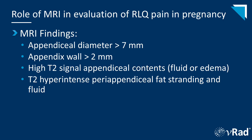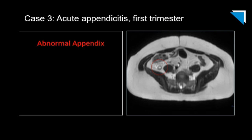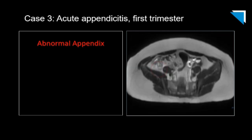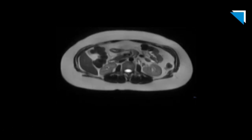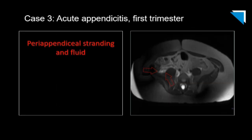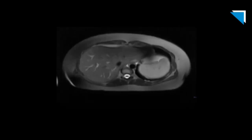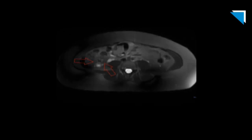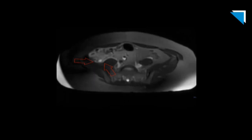Let's move on to some positive examples. Here's a first trimester patient with a thick-walled, fluid-filled, and distended appendix with adjacent stranding and fluid. Here's the T2 axial clip showing the thickened retrocecal appendix with adjacent fluid — just your classic look of acute appendicitis. Here's the T2 axial fat-suppressed image, bringing out that periappendiceal edema. Here's the full fat-suppressed T2 clip.